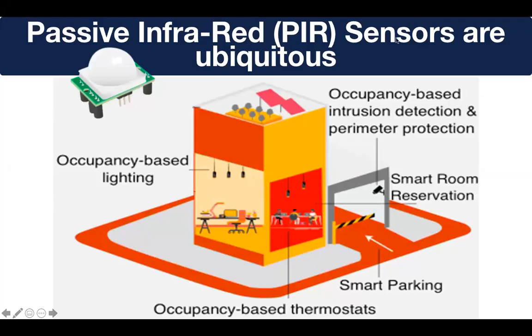Passive infrared, or PAR sensors, are ubiquitous in modern buildings. They're used in applications ranging from lighting, thermostats, parking, room reservation, and intrusion detection, to name a few.